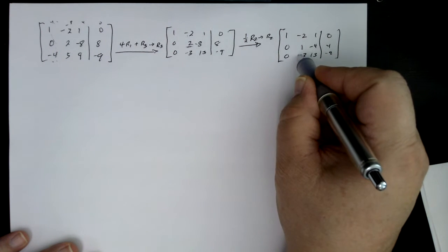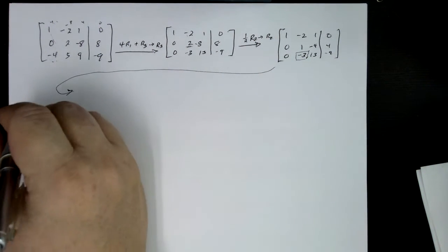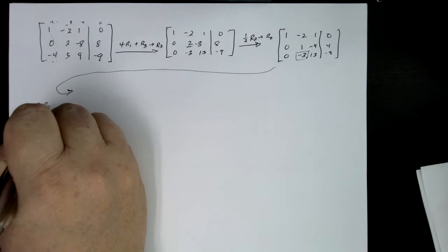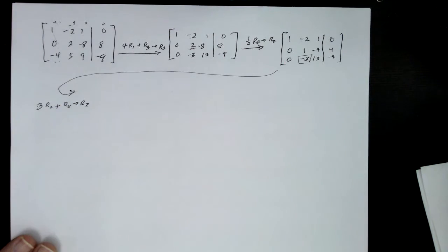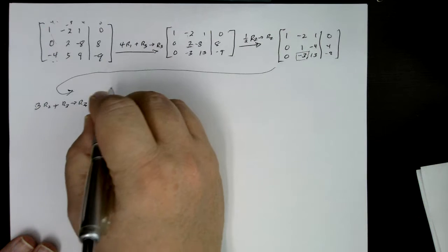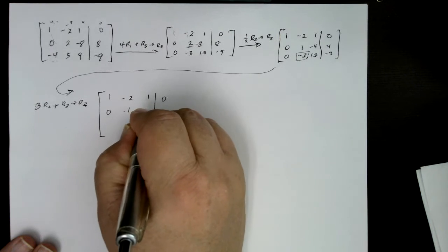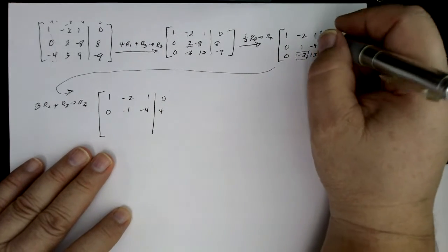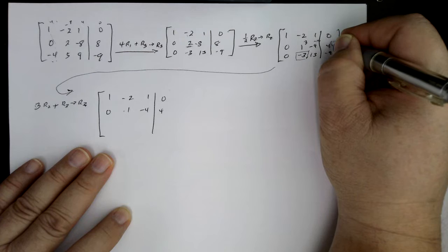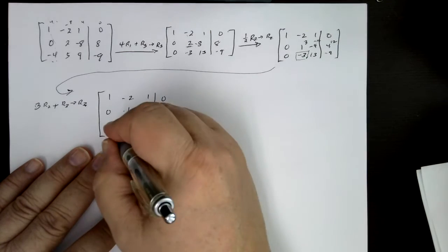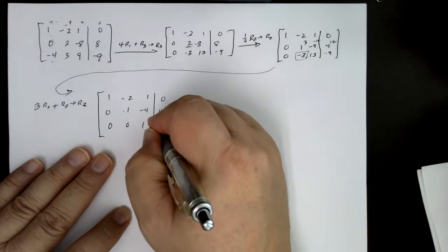And now we're going to continue. I want to eliminate x2 from the third equation. So what am I going to multiply this by? I think I'm going to take three times row two, and then add three, add the result of R3, and then put the result back into R3, right? So let's go ahead and write down the result of that. One minus two, one stays the same. Zero, one minus four, four stays the same. But now when I multiply this by three, this is going to be a three minus 12 and 12. All right, so three minus three is zero, and then 13 minus 12 is one, and then 12 minus nine is three. Good.